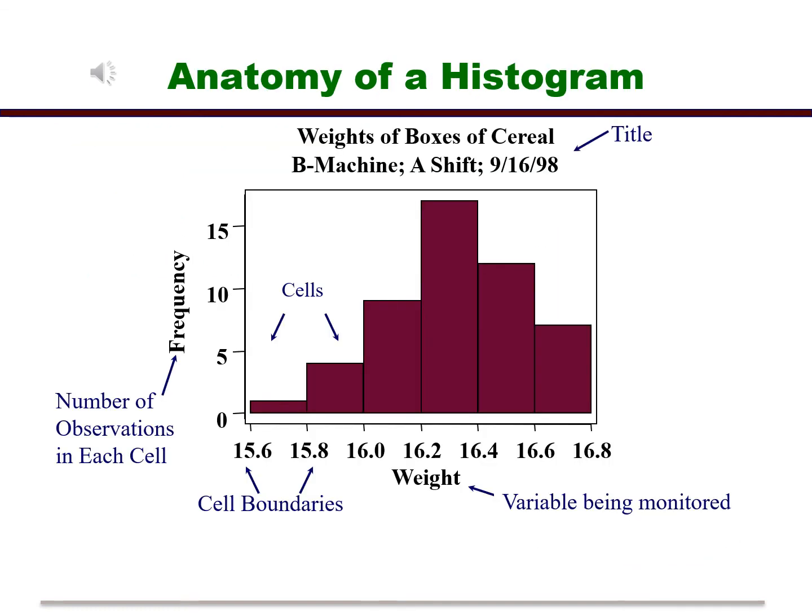Let's look at the anatomy of a histogram. We start at the top with the title. Here it is weights of boxes of cereals off the machine from the A shift. At the bottom, we see that the variable being monitored is weight. Looking at the left, which is the vertical axis, we see the number of observations in each interval.